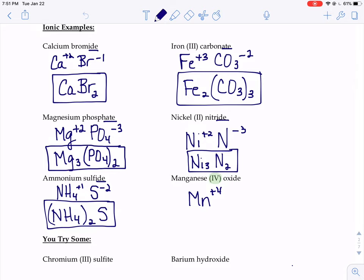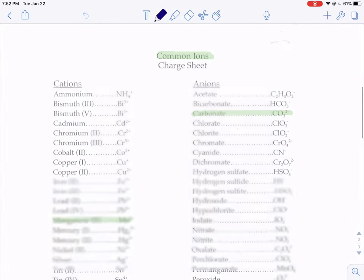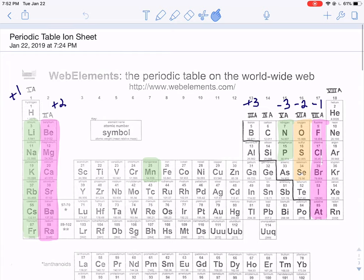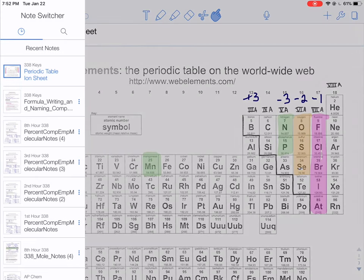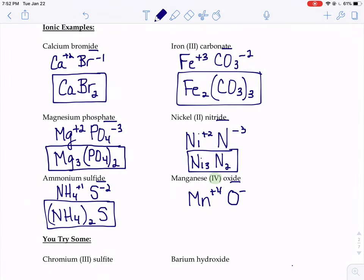If manganese is plus 4, oxide, that sounds an awful lot like oxygen. So we'd write down the symbol for O. We need to go to that periodic table to determine what the charge of oxide would be. It's in that orange column there on the right. Charge of negative 2. Positive 4, negative 2. We're going to need 2 oxides to balance out the charge on that manganese.